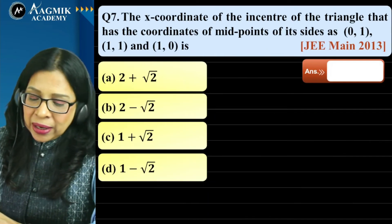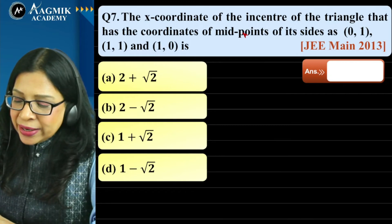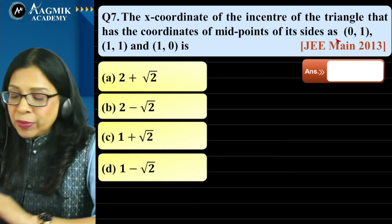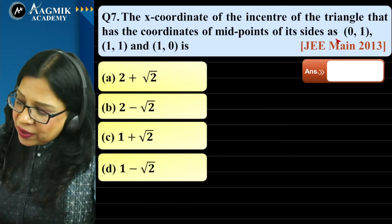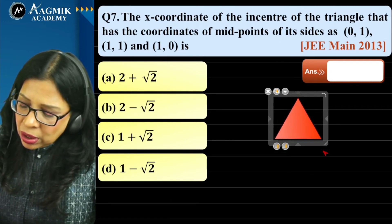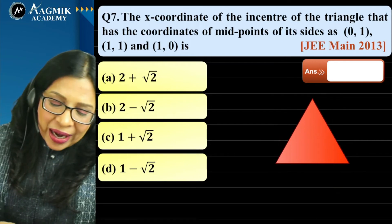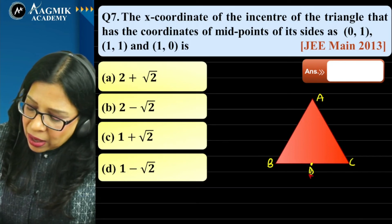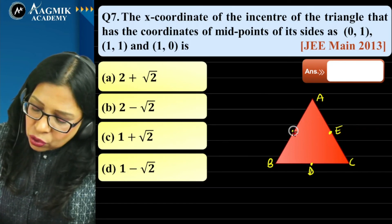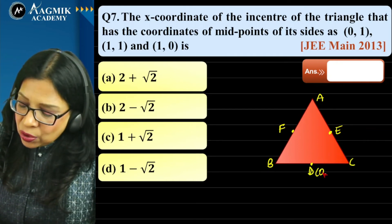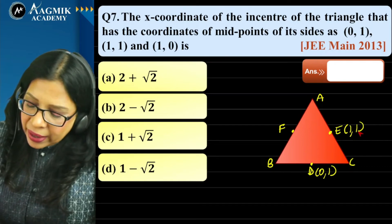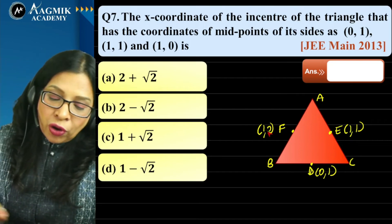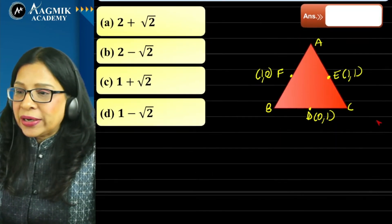Question 7: Find the x-coordinate of the incenter of a triangle whose midpoints of sides are (0, 1), (1, 1), and (1, 0). First find vertices A, B, C from the midpoints.